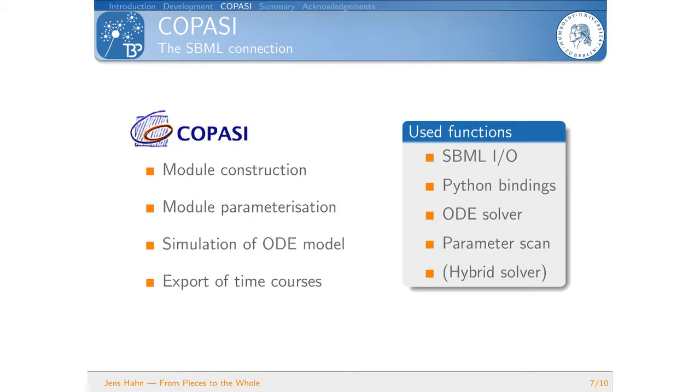So now to COPASI. COPASI is the heart of our simulation at the moment. We use it for module construction, for module parameterization, especially with the feature of the parameter scan which is really handy. Then we simulate our ODE model with it, export the time course again and visualize it in our framework. So the main functions we use is the SBML import export. We control COPASI via Python bindings. Our framework is completely written in Python. We use the ODE solver of course, as I said the parameter scan. And we're working right now on the idea of putting the gene regulation module in the hybrid solver to have the gene regulation module be simulated stochastically while the rest is simulated deterministically with the ODE solver.